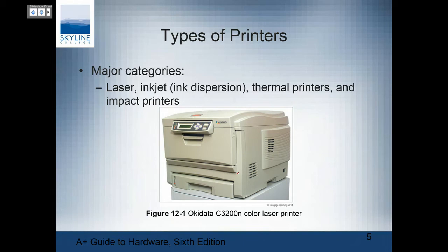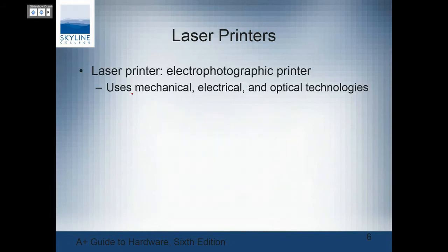Types of printers: the majors are laser, inkjet, thermal, and impact. Thermal printers are the ones we see at the gas station — your receipt is on thermal paper. The issue with thermal receipts is they do fade away, so if you need to keep a receipt, you may want to make a copy. Laser is very popular. Inkjet is typically for home use — it uses ink dispersion, boiling the ink out of the nozzles. CompTIA really wants you to know about the laser printer process.